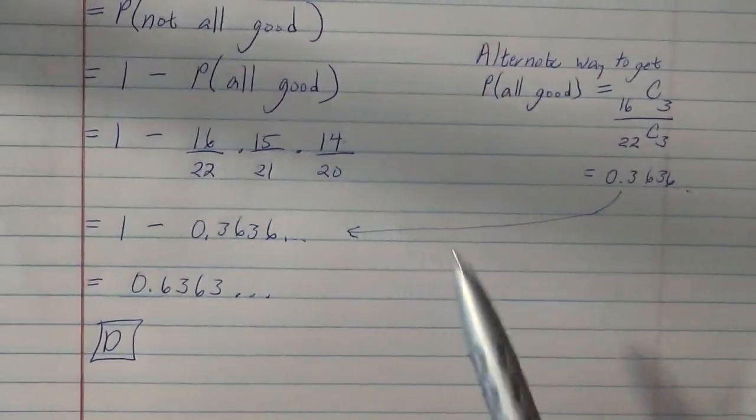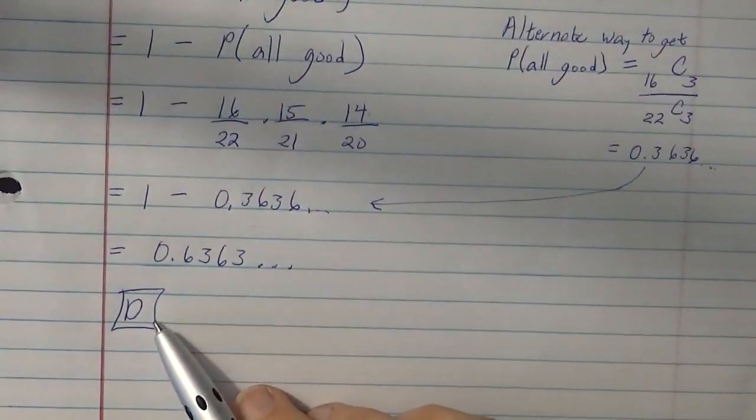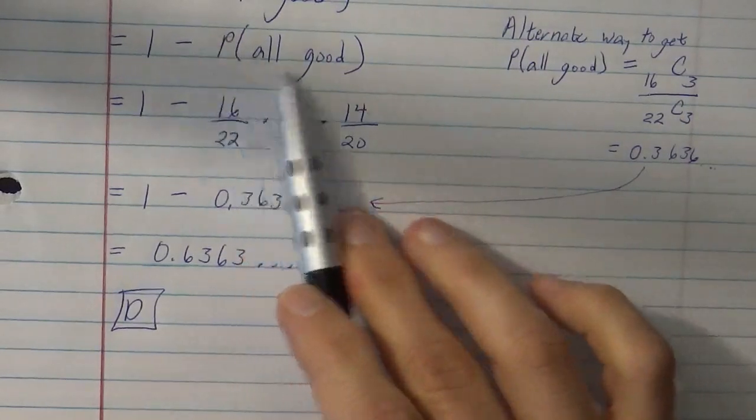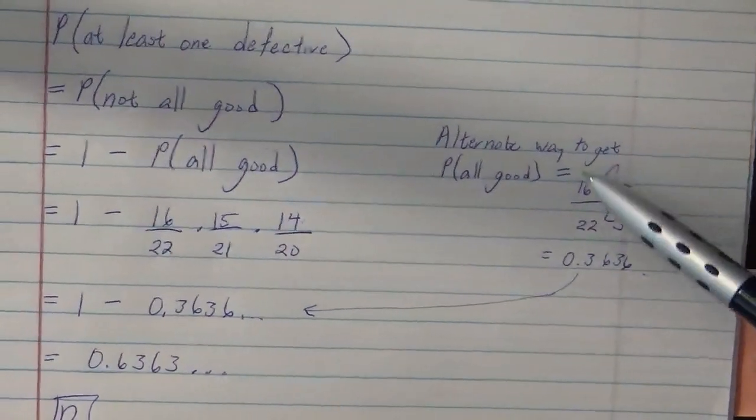Then you learn a new fancy way of finding this. So you're done there, you can stop there if you want. Now, if you prefer to find the probability of all good using your new fancy combinations,